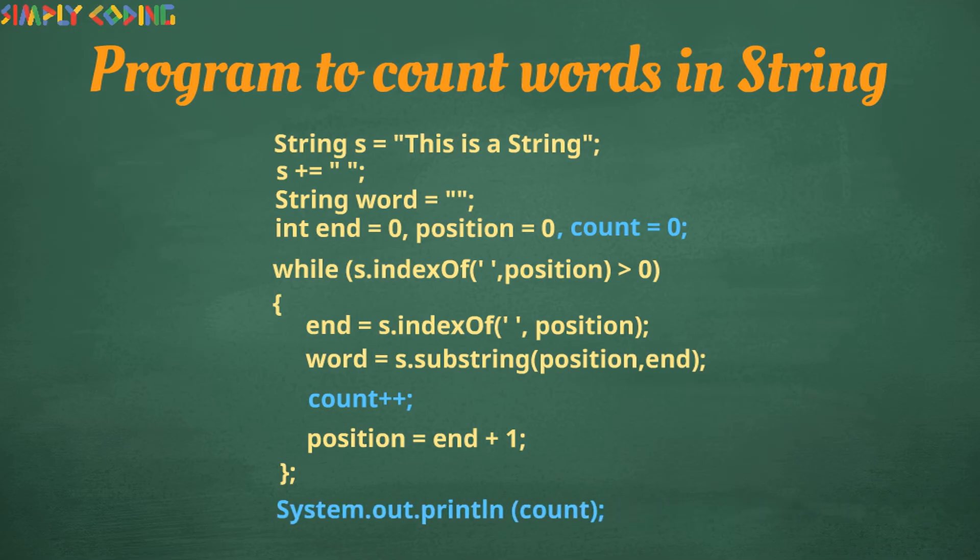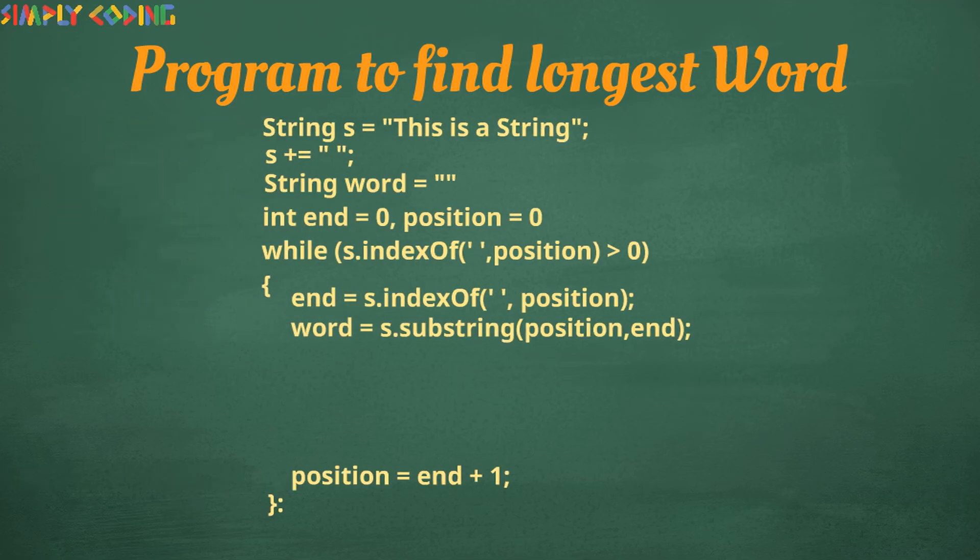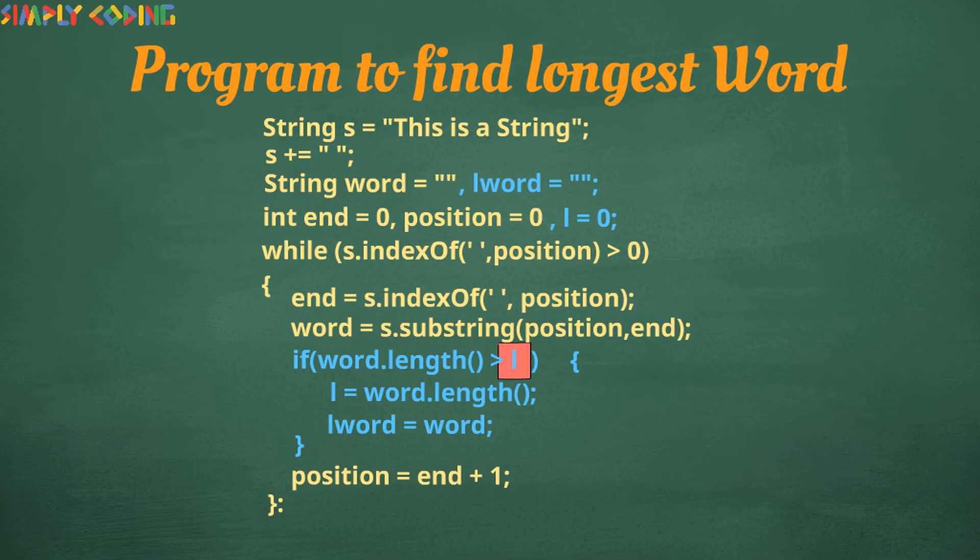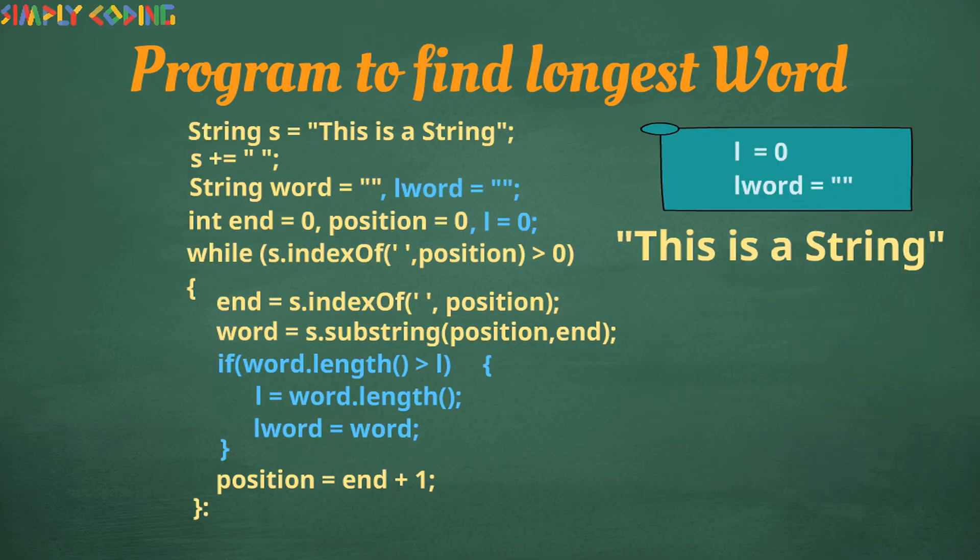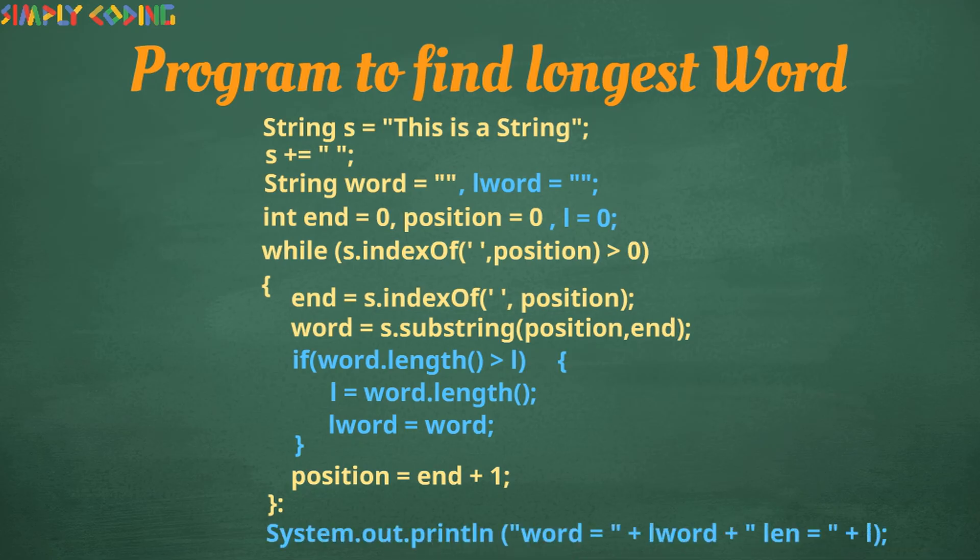Or the program could be find the longest word. Here we will first initialize string lword and length l outside the loop. We will first get the length of the word we just caught. We will compare it with our stored length l. If the length is greater than l, then we will copy the word into lword and its length in l. The first time we enter the loop, l is anyway 0 so will be lesser than the first word. So the first word gets copied in lword. After this only if the length is greater than l, then the word will get copied and corresponding word length will get updated. At the end of the loop, you can print the longest word and its length.